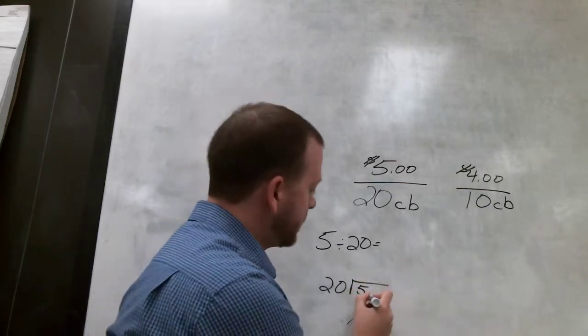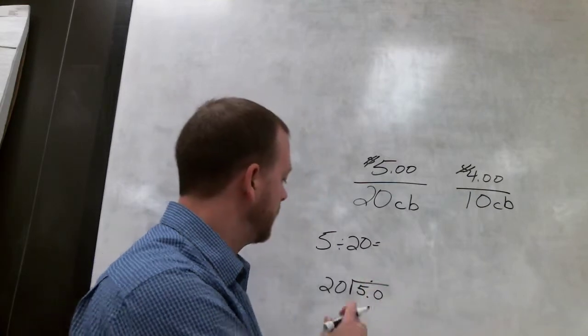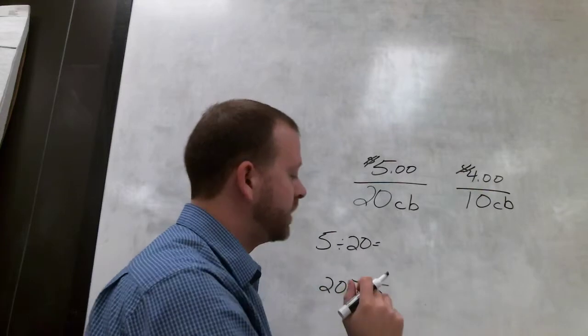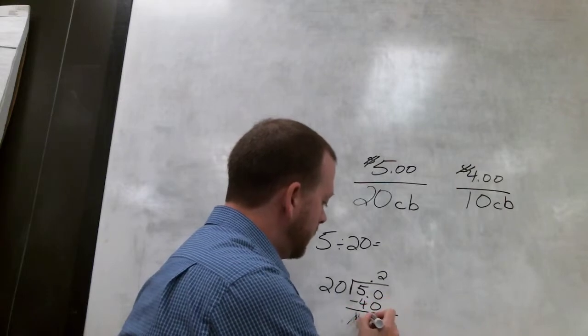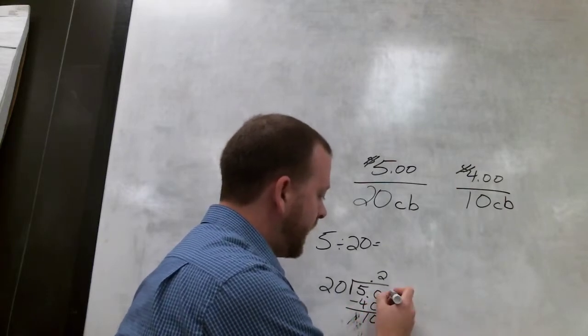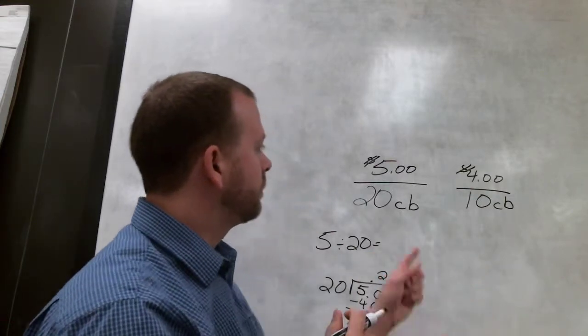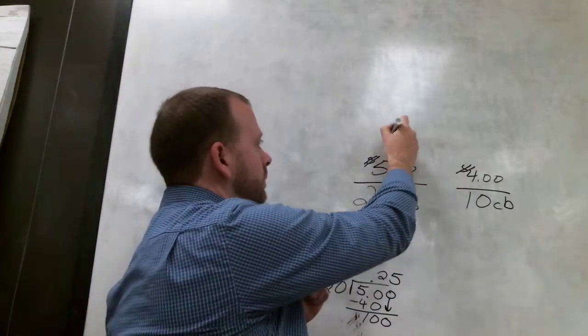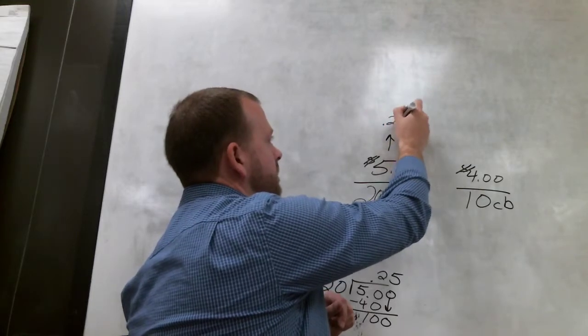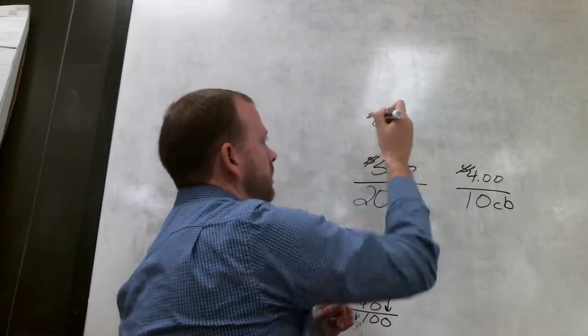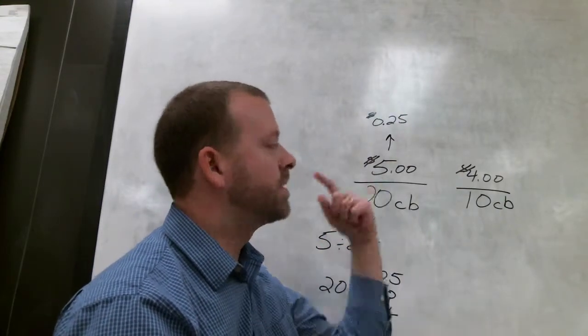So first thing we do is we add our decimal, put a 0 behind it, make sure our decimal gets carried up there. Now we divide. So how many times will 20 go into 50? Well, we know 2 times. That gives us 40, 10 left over. Add a 0, bring it down. How many times will 20 go into 100? Well, 5 times. So the unit rate for each candy bar in this one, right here, is 25 cents per candy bar. So according to this, that's how much I'm paying for each candy bar.